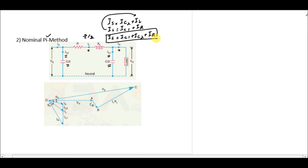For the voltage value, VS is equal to IL·Z plus VR. This VR voltage is actually across this capacitance as well, because the load and the capacitance C/2 are in parallel. So the voltage across the load also appears across the capacitance. If we add VR and the voltage across the line impedance, that gives you VS, which is the voltage across the capacitance at the sending end.